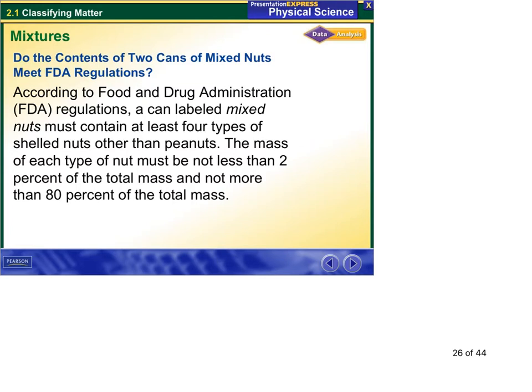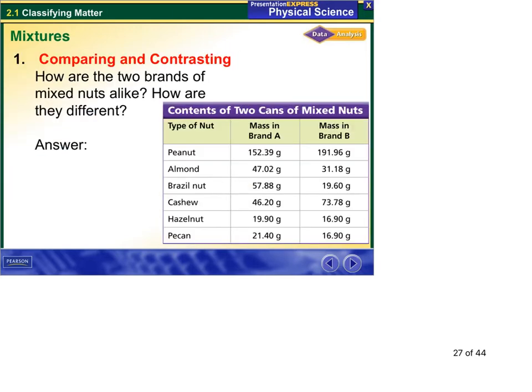Here we run through a little bit of some questions involving mixtures. According to the FDA, a canned label mixed nuts must contain at least four types of shelled nuts other than peanuts. The mass of each type of nut must not be less than 2% of the total mass and not more than 80% of the total mass. So some guidelines to make it mixed nuts.